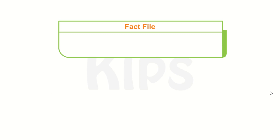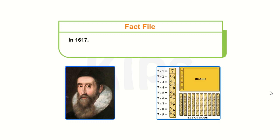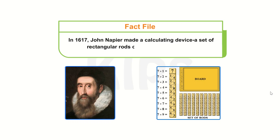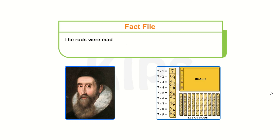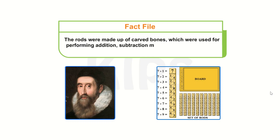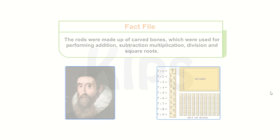Let me share an interesting fact with you. In 1617, John Napier made a calculating device — a set of rectangular rods called Napier's Bones. The rods were made up of carved bones, which were used for performing addition, subtraction, multiplication, division and square roots.